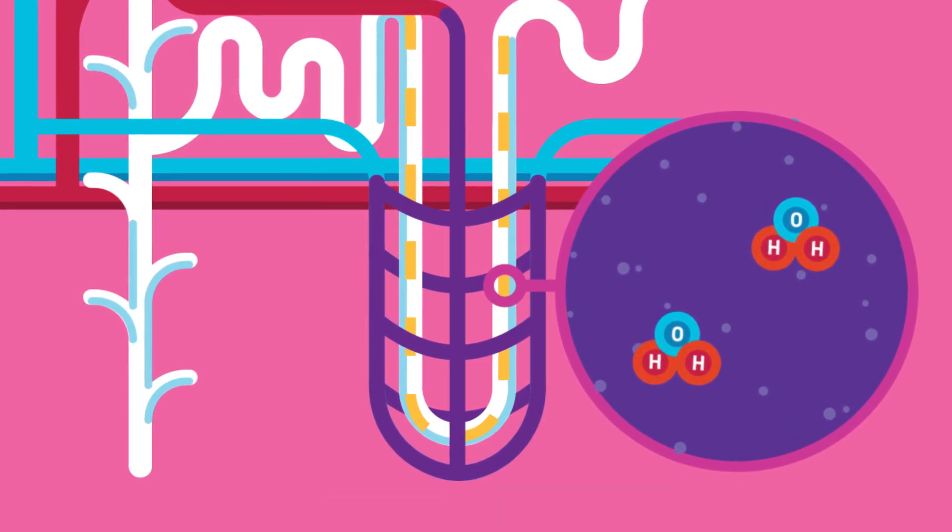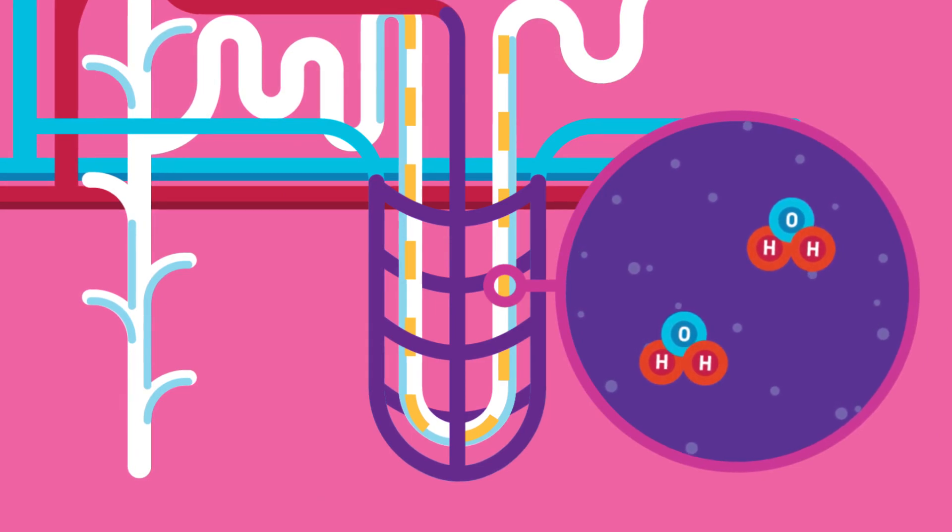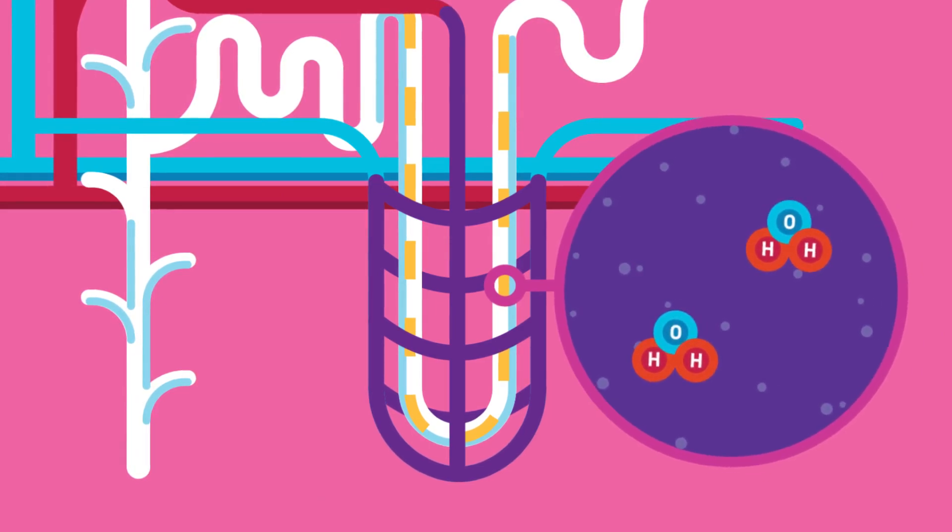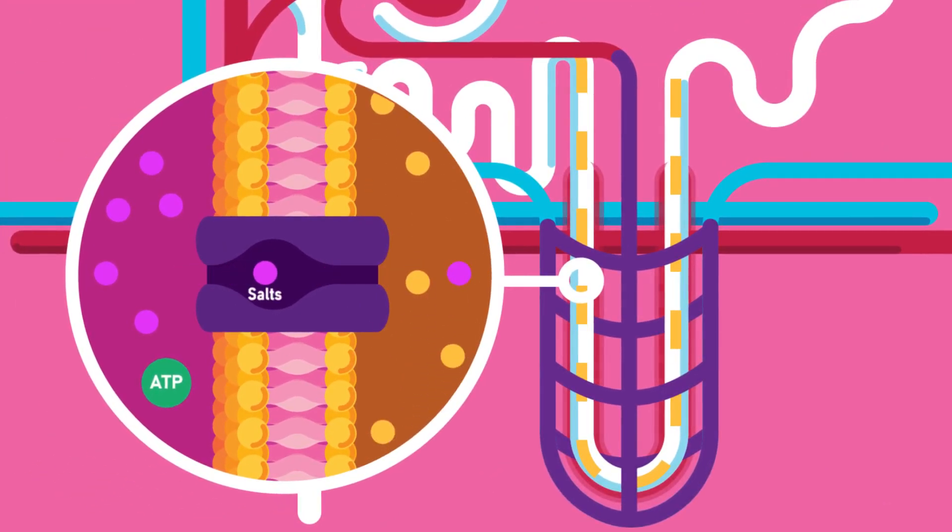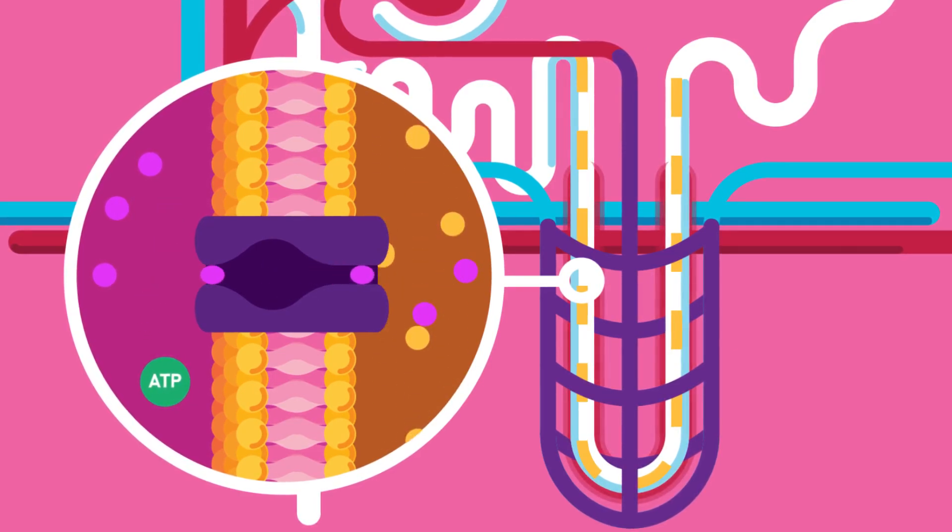As it moves along this tube, all useful substances are reabsorbed into the surrounding blood capillaries. This absorption is against the concentration gradient and helped by active transport.